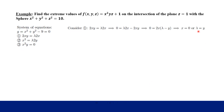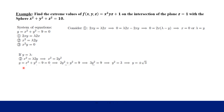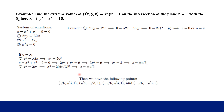Now we consider the second possibility: λ = y. Substituting λ = y into equation two gives us x² = 2y². Plugging that back into the constraint equation x² + y² = 9, we get 2y² + y² = 9, so 3y² = 9, giving y = ±√3. Then substituting back into equation two gives x = ±√6. The combinations of ±√6 and ±√3 with z = 1 give us four more candidate points.